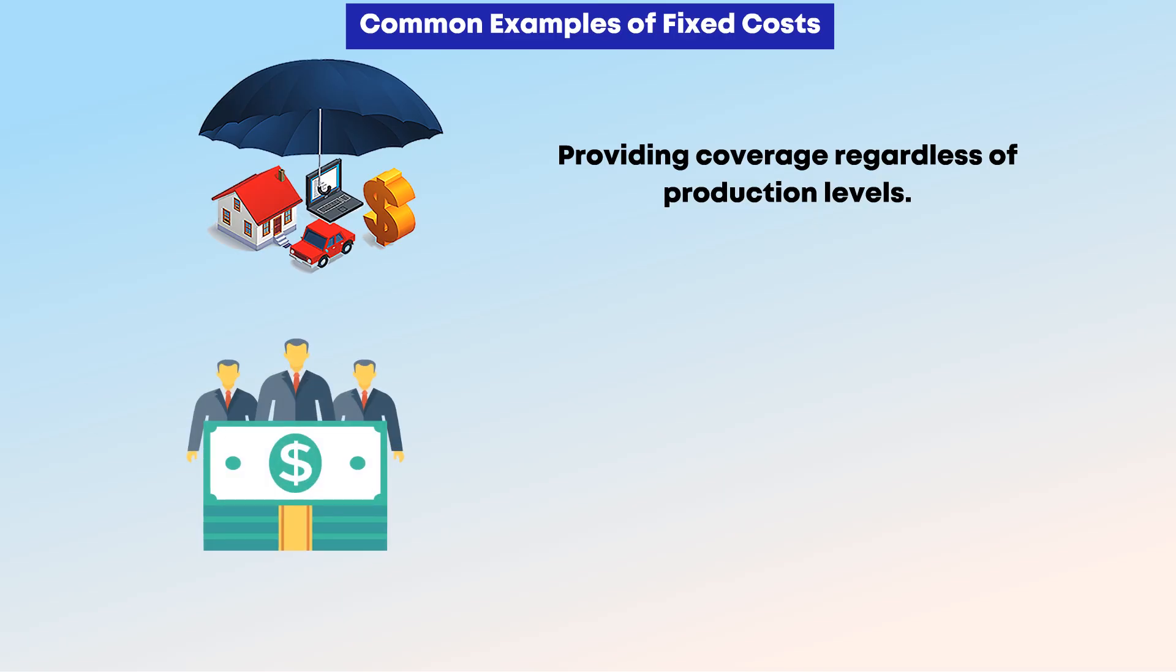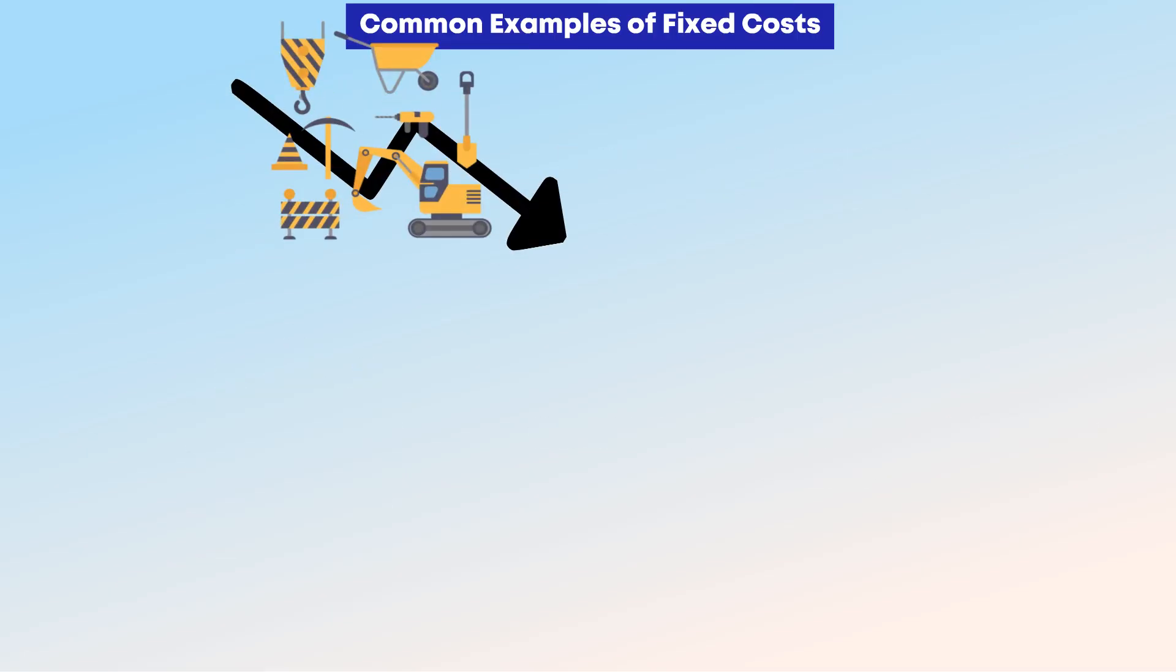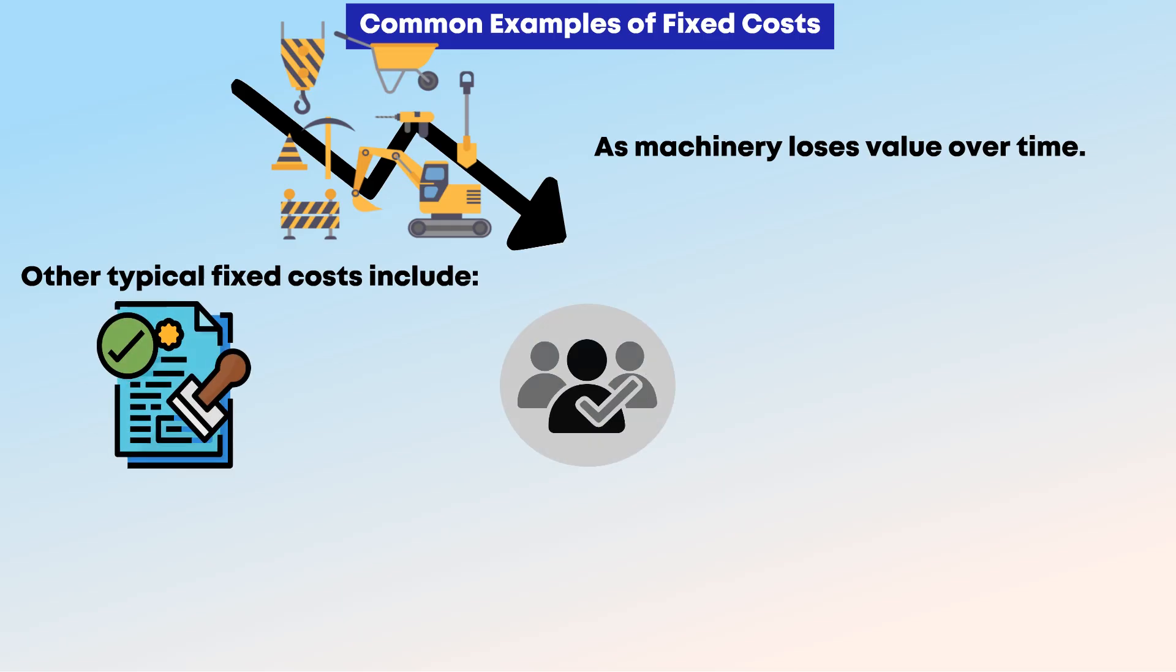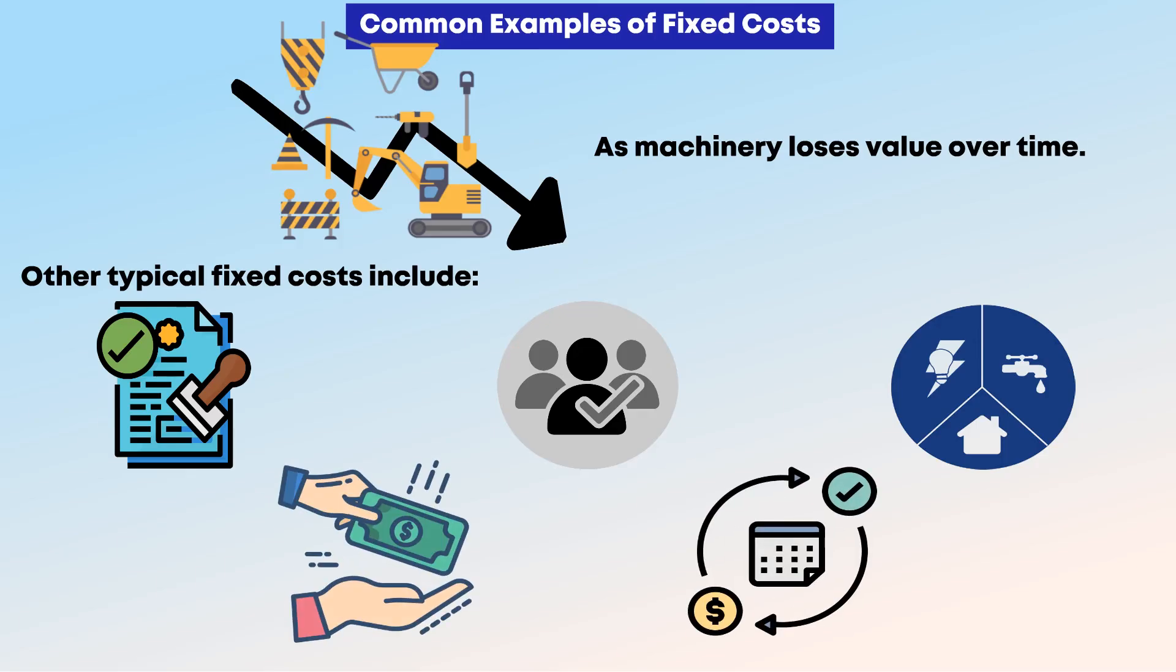Employee salaries for permanent staff constitute another significant fixed cost category. Equipment depreciation also falls into this category, as machinery loses value over time, independent of usage intensity. Other typical fixed costs include business licenses, professional memberships, basic utility connections, loan payments, and software subscriptions with flat monthly fees.